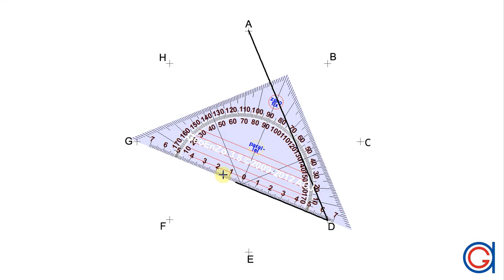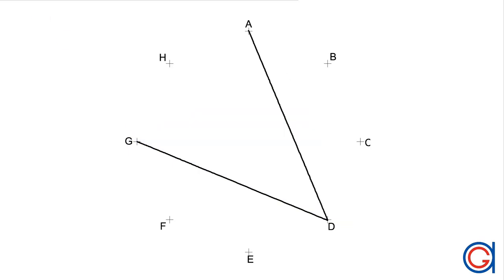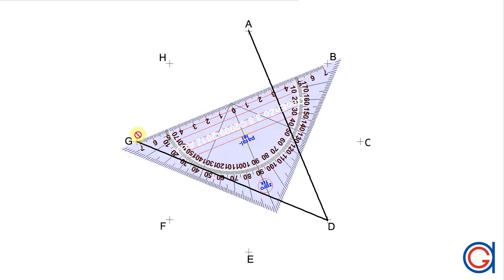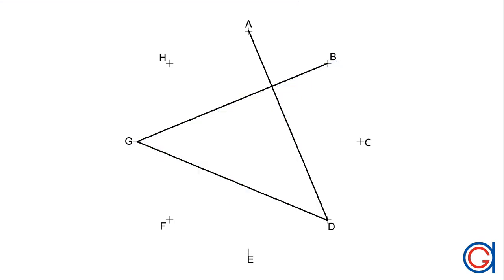And we continue connecting vertex D with vertex G, skipping vertices E and F. And now we join vertex G with vertex B, skipping vertices H and A.